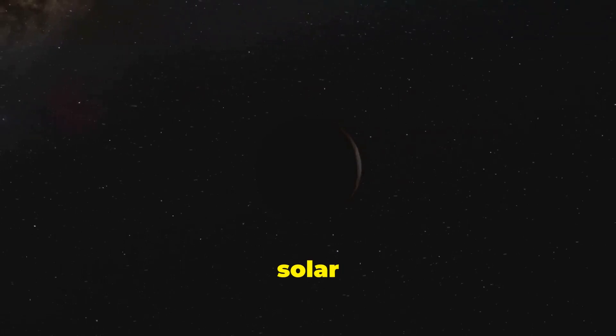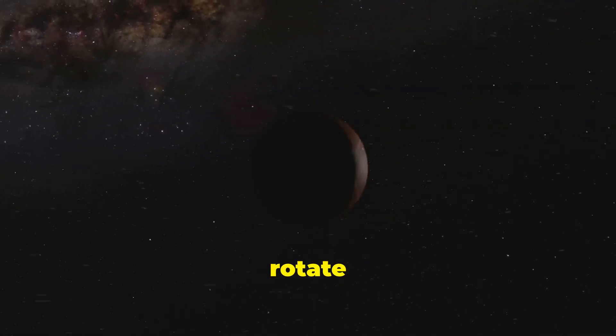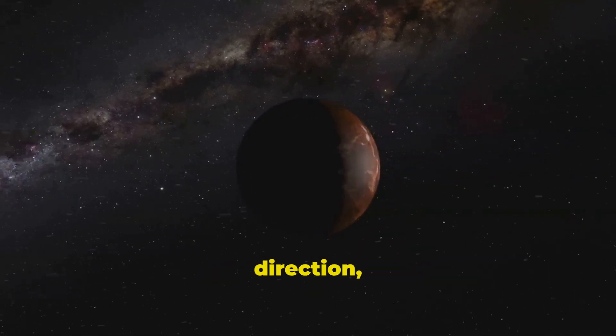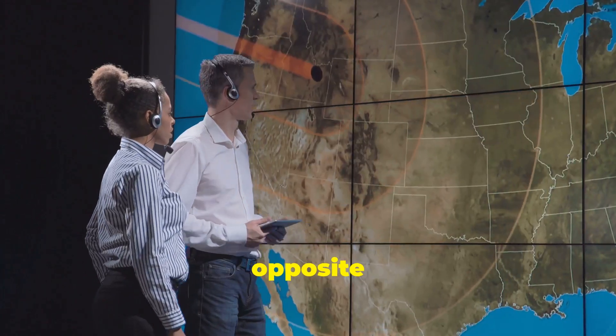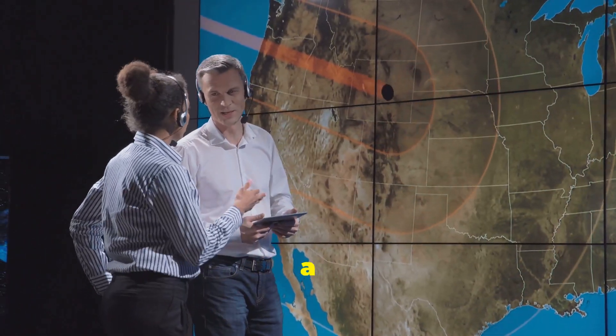While most planets in our solar system, including Earth, rotate on their axis in a counterclockwise direction, Venus spins clockwise. Why Venus rotates in the opposite direction is still a bit of a mystery.